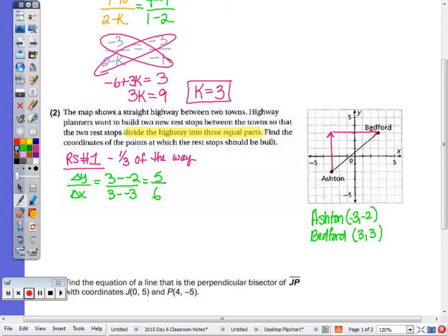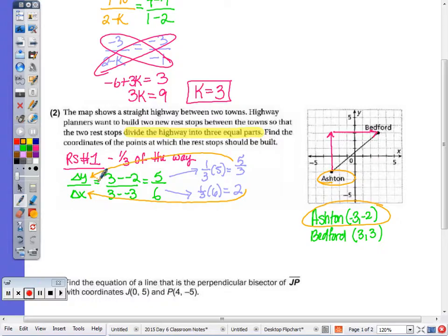Now I don't want to simplify. I just want to remind you of that even though you can't even simplify 5, 6. But now I take 1 third of 5 and 1 third of 6. I can take 1 third of 5, so I'm going to leave it at 5 thirds. But I can take 1 third of 6, which is 2. So now I need to look at my two points. So from Ashton, from this point, I'm going to add 2 to my x-coordinate. I'm going to add 5 thirds to the y-coordinate.